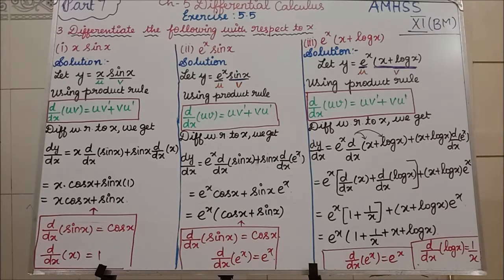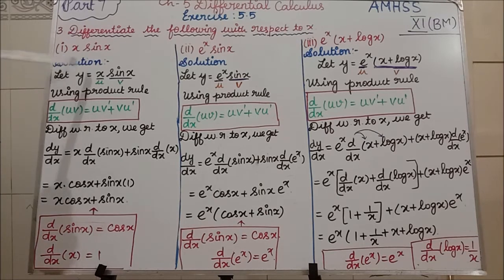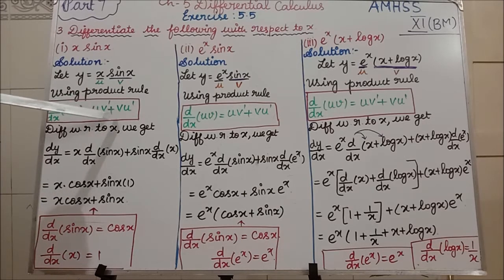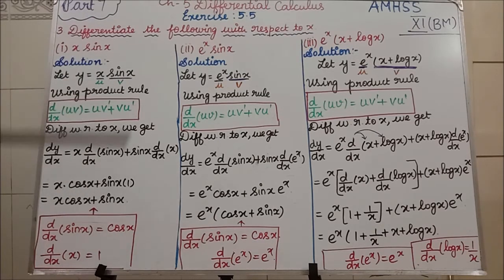Now we start with the first subdivision: x·sin(x) is our question. We will take the question as y = x·sin(x). Take x as u and sin(x) as v. Now using the product rule: d/dx of uv = u·v' + v·u'. That is our product rule formula. Now differentiating y with respect to x.